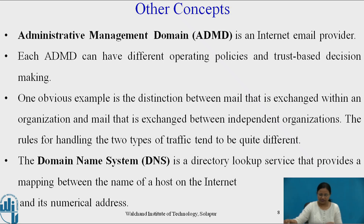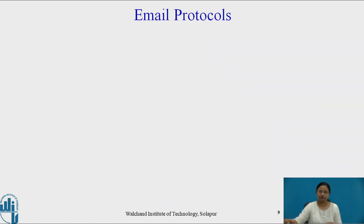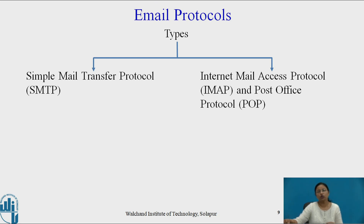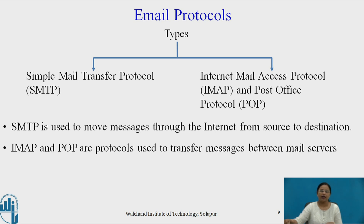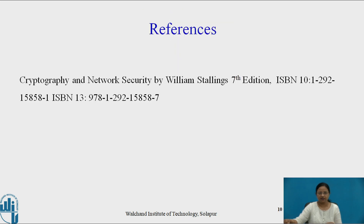The second concept is domain name service, DNS, which is a directory lookup service that provides a mapping between the name of a host on the internet and its numerical address. There are two types of email protocols: simple mail transfer protocol, SMTP, and internet mail access protocol, IMAP, and post office protocol, POP. SMTP is used to move messages through the internet from source to destination, while IMAP and POP are protocols used to transfer messages between mail servers. The details of these two protocols will be studied in the next video.